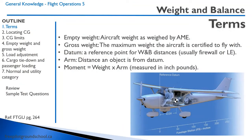Let's begin with a few terms related to weight and balance. First, the empty weight — the aircraft weight as weighed by an aircraft maintenance engineer. You'll find the weight and balance documents in your document pouch. You're required to have it on board, and that empty weight gets amended every time an AME installs or removes a piece of equipment. The gross weight is the maximum certified weight of the aircraft. The datum is a reference point for weight and balance distances — usually the firewall or leading edge — and all distances are measured from that reference point.